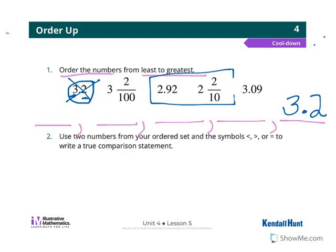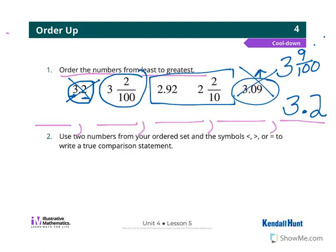So now I'm going to look at 3 and 2 hundredths and 3 and 9 hundredths. They both have a 3, so I'm looking at the hundredths. I can write that as a fraction to help me compare. I know 9 hundredths is more than 2 hundredths.